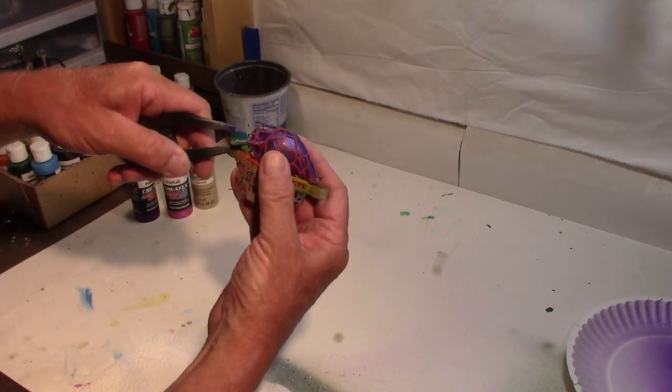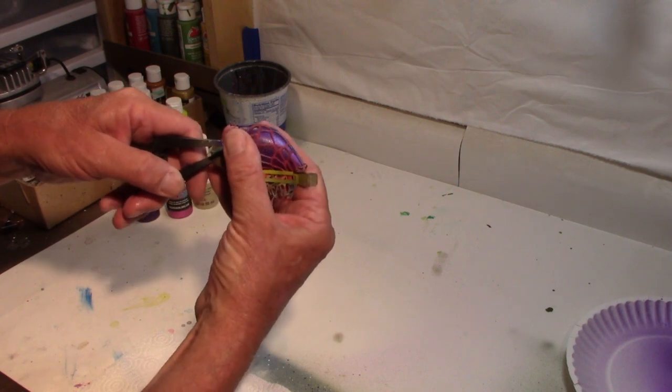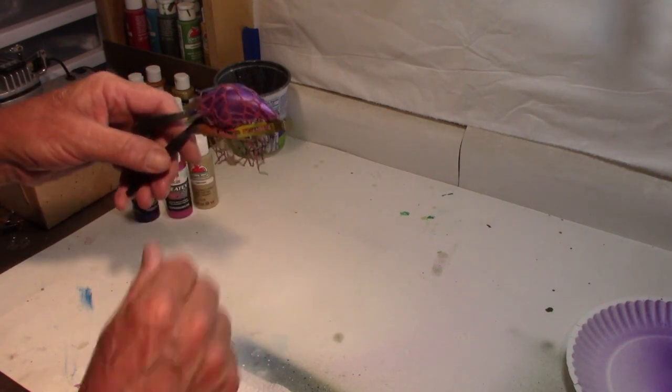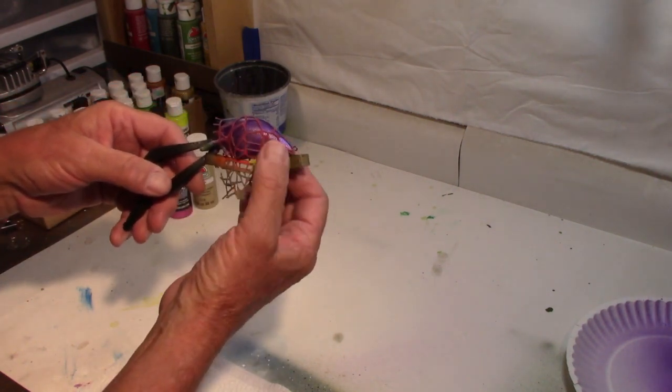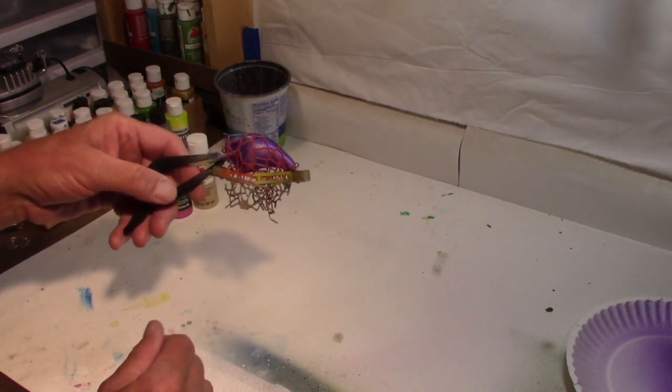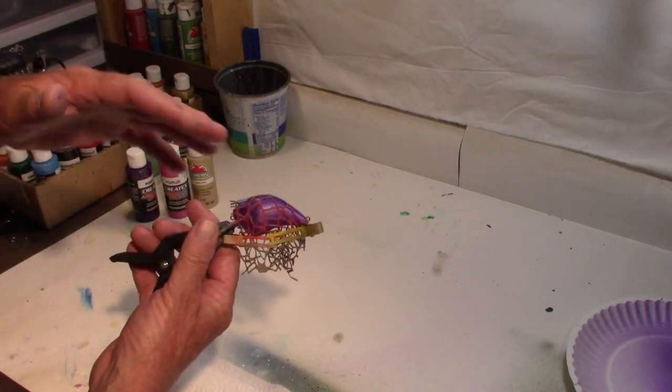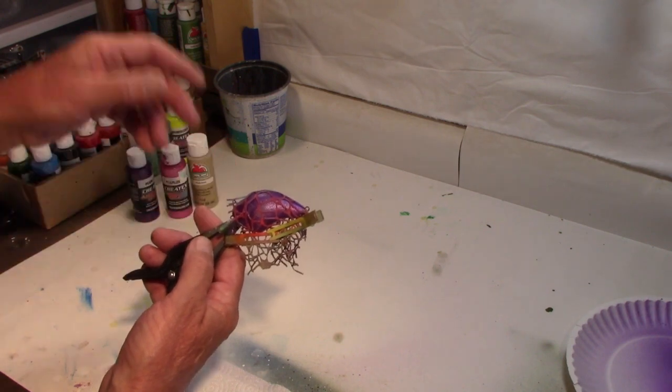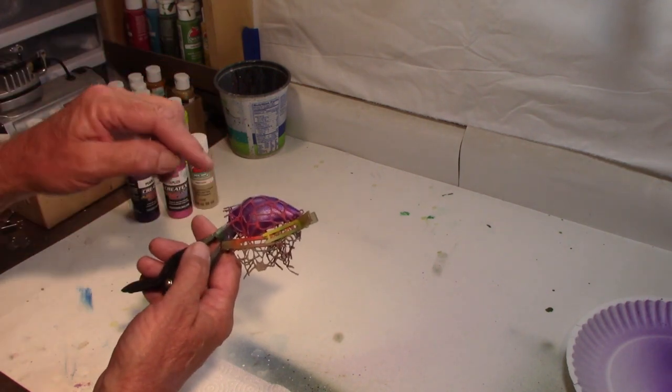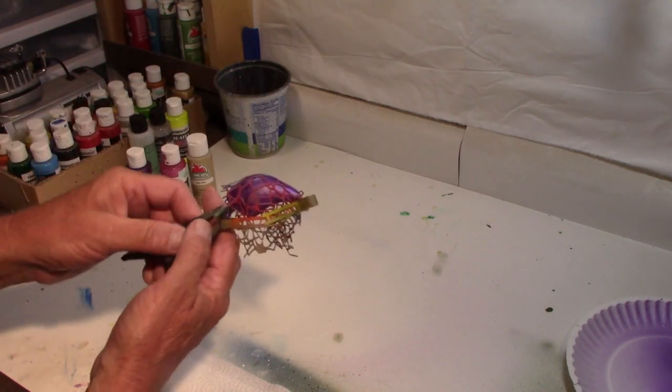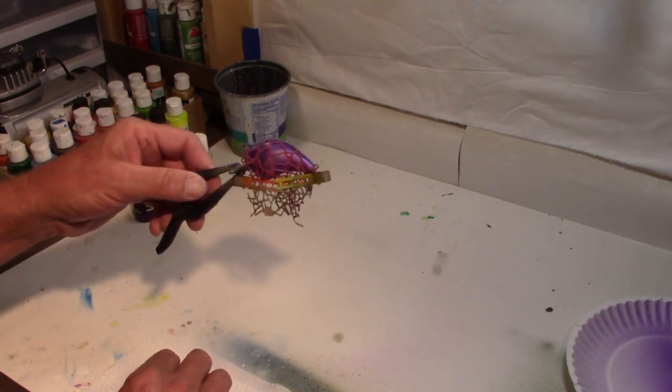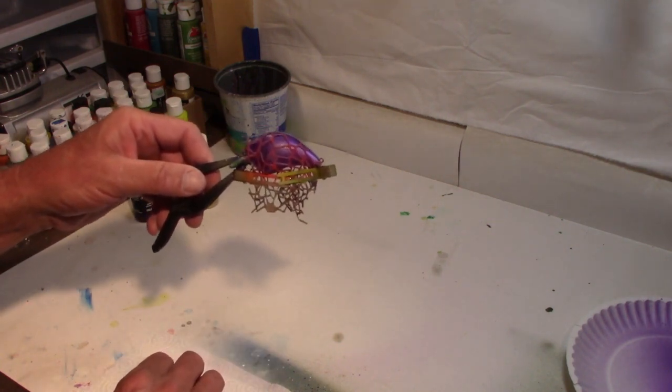Alright. Got a wrap on it. The wrap now will allow us to have our pearlized plum show through when we're done. So the next thing we need to do, in order to get the colors to be proper on the regular paint, we need to now cover this entire lure with an opaque white. So that's what we'll do next.